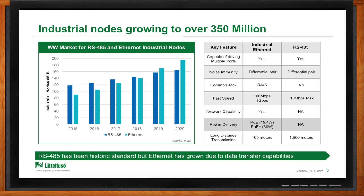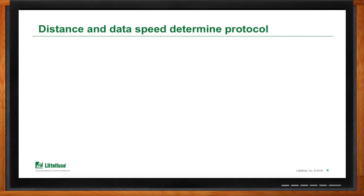Ethernet runs at a faster speed — up to 1 gigabit per second — while RS-485 is limited to 10 megabits per second. Ethernet also has the ability to do Power over Ethernet, which powers the field device. RS-485, on the other hand, has the ability to transmit longer distances — up to 1,500 meters — while industrial Ethernet is limited to 100 meters.